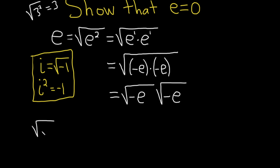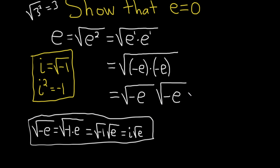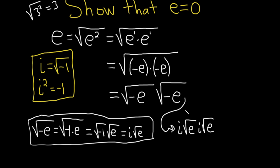So how do you deal with the square root of negative e? Well, most of the time people simply write i times the square root of e. To justify it: we can write the square root of negative e as the square root of negative 1 times e, which is the square root of negative 1 times the square root of e — just breaking the square root into two pieces. The square root of negative 1 is i, so we get i times the square root of e. Most people just go straight to putting an i there when they see the negative.